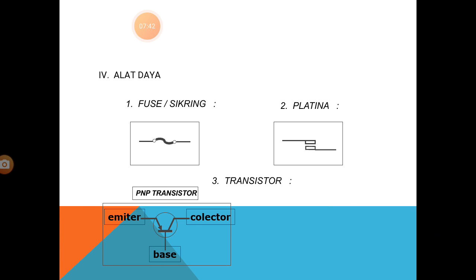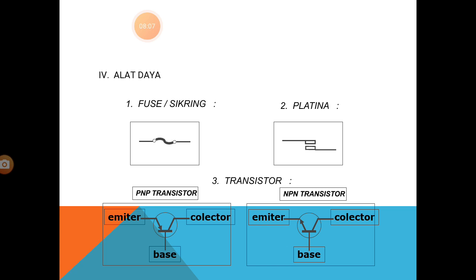Selanjutnya, transistor. Transistor PNP: ini emitter, kolektor, base. Emitter simbolnya masuk, arah panahnya masuk. Terus simbol transistor NPN: simbolnya keluar, arah panahnya keluar.